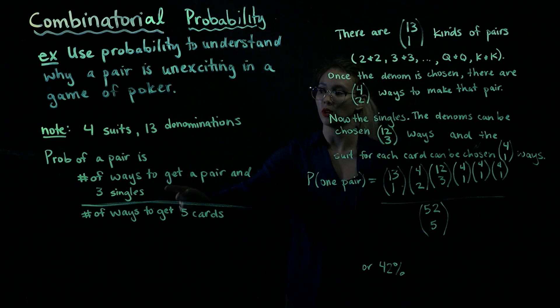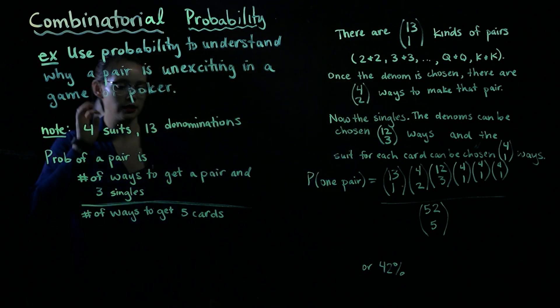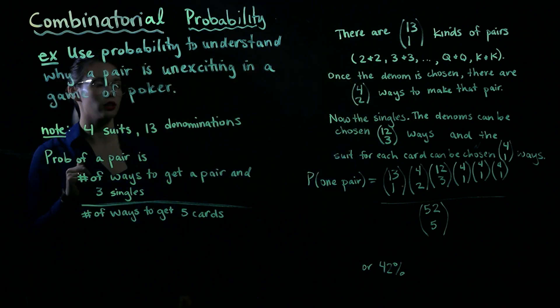So the number of ways to get a pair and three singles. First, there's a lot of orders you could think about this in, but I will think about it this way.